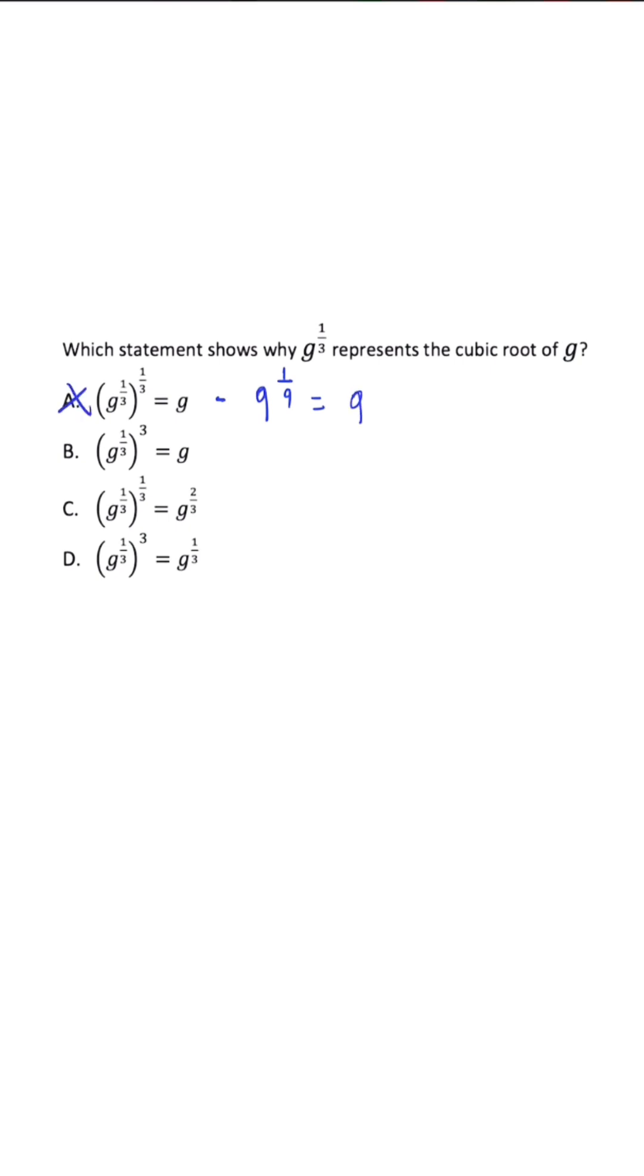So this is incorrect. When we get over to answer choice B, when we multiply our exponents, we're going to get g to the three over three power, which simplifies to just g. So this is going to be our correct answer.